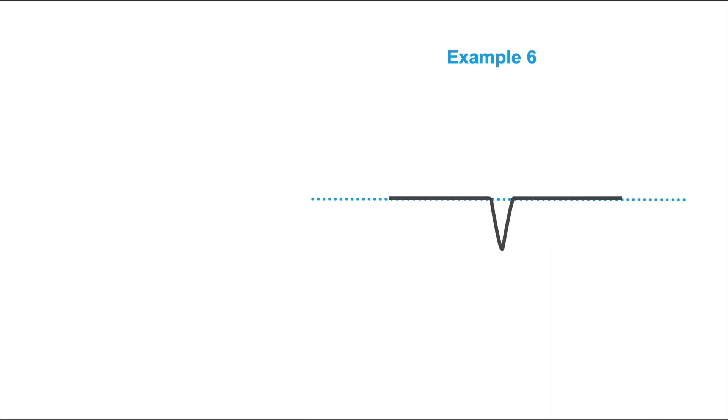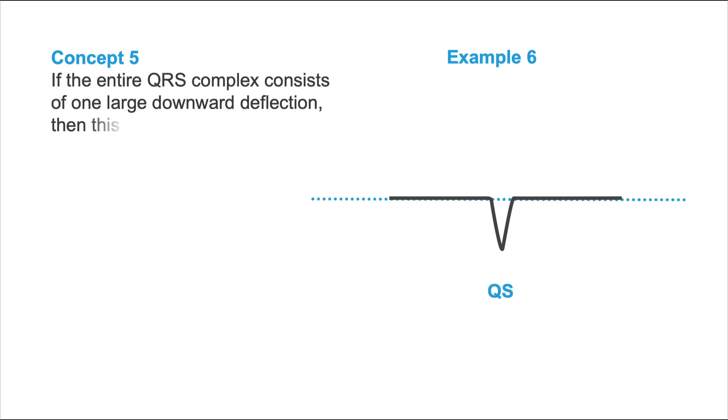And one final example. Example number six. Pause the video and try for yourself. Also quite easy, right? Only one concept fits here. And that's concept number five. If the entire QRS complex consists of one large downward deflection, then this is called a QS-pattern.